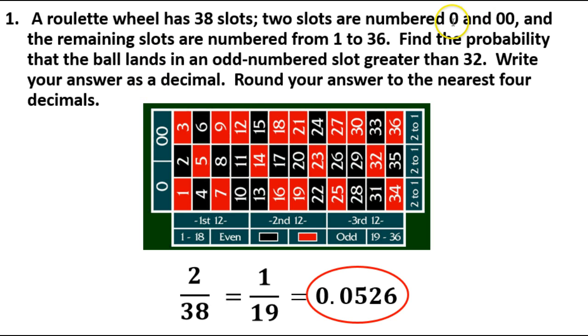And this gets just a little bit confusing. Just remember that 0 and 00 are actually slots available. So it's a total of 38 possibilities, not 36.